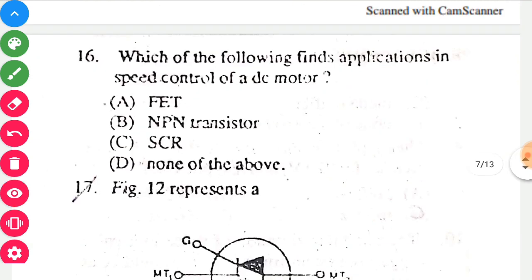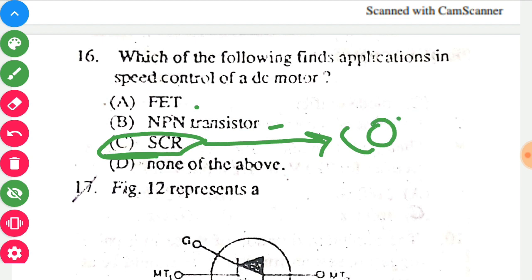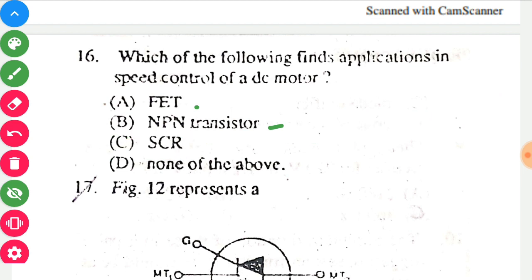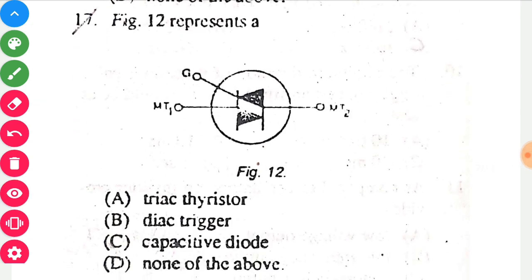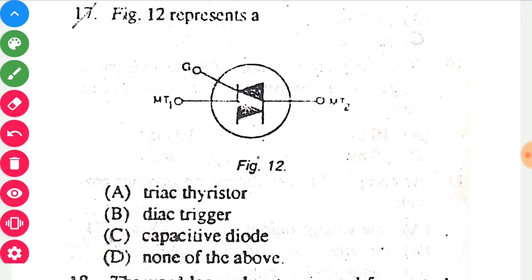Which of the following finds applications in speed control of a DC motor? MOSFETs and NPN transistors with PWM signals can be used, but SCRs convert AC to DC to provide efficient variable speed control of DC motors and are widely used in industrial applications. So option C is correct.